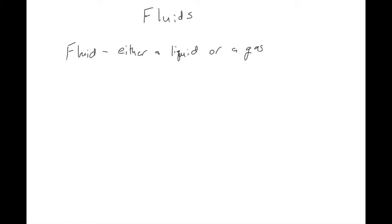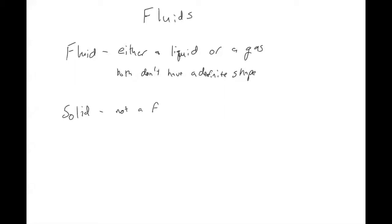So there are differences between liquids and gases. But the thing that's similar about them that lets us group them together as fluids is that they don't have a definite shape. And that has to do with the molecules or atoms that make up the liquid or gas — they interact with each other but in a different way than solids interact with each other. So for reference, a solid is not a fluid, and that's something that has a definite shape.